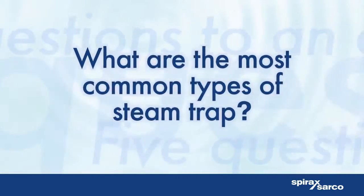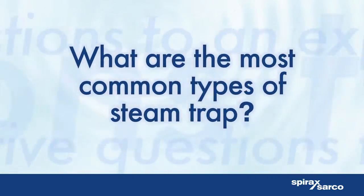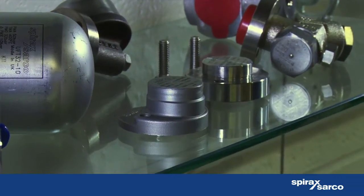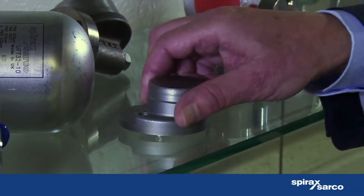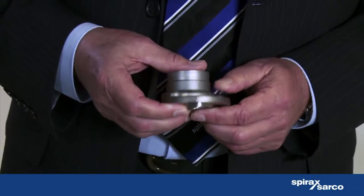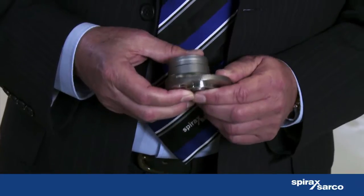What are the most common types of trap? Thermostatic steam traps operate by using the temperature difference between steam and condensate. These traps are great for applications such as trace heating and small steam heating packages.